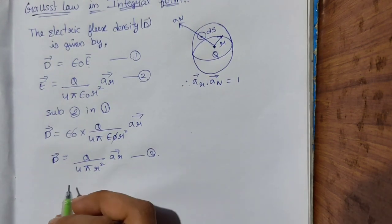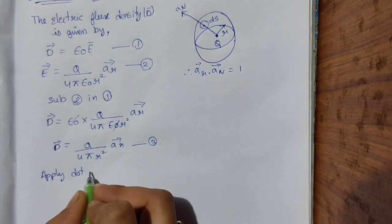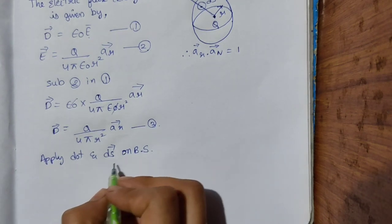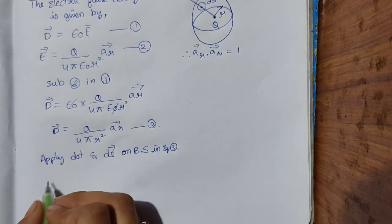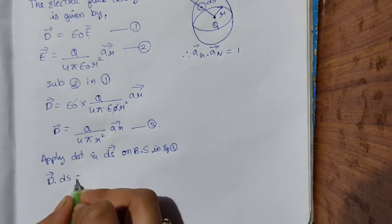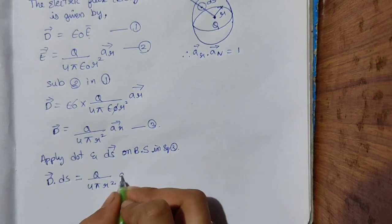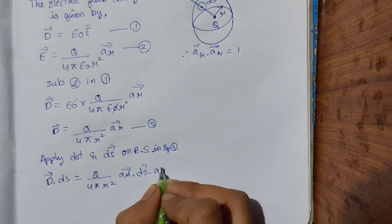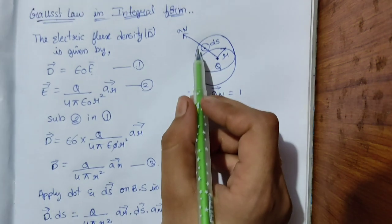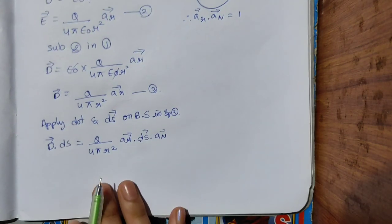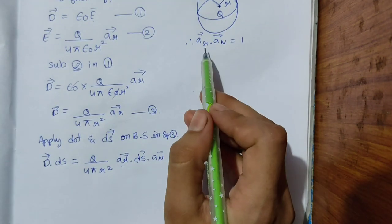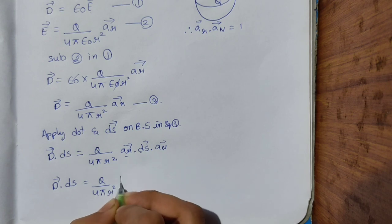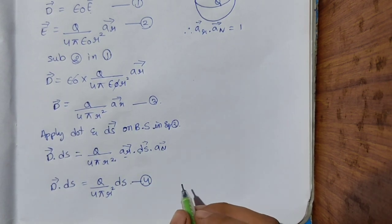Now apply the dot product with differential surface area dS on both sides of equation 3. Then D · dS = Q / (4π r²) · â_r · dS · â_n. Since â_r · â_n = 1, this simplifies to D · dS = Q / (4π r²) · dS — keep this as equation 4.